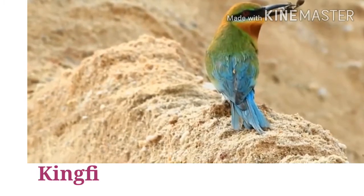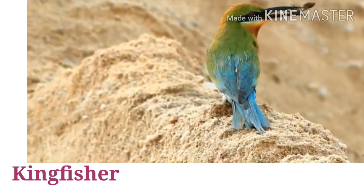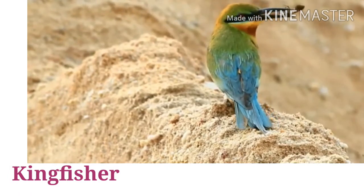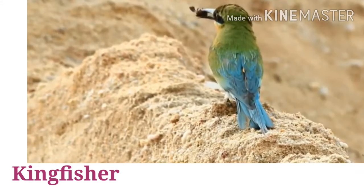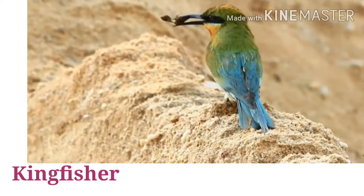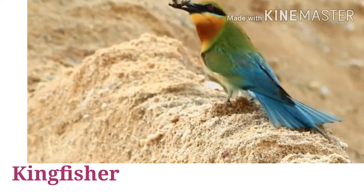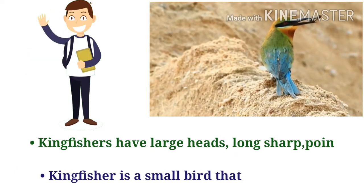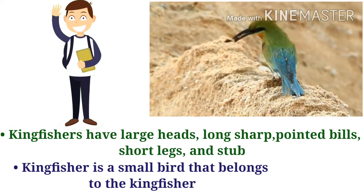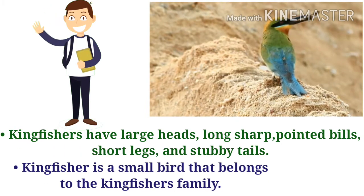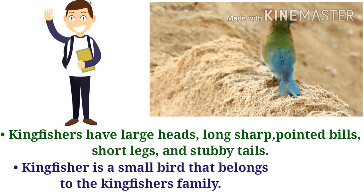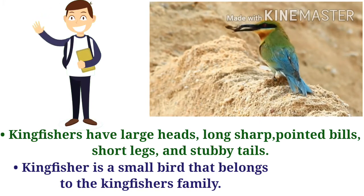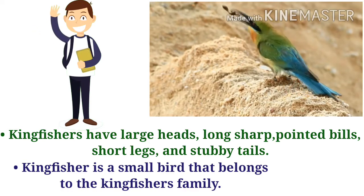Do you know this bird? This is a kingfisher. K-I-N-G-F-I-S-H-E-R. Let's introduce the kingfisher. Kingfishers have large heads, long sharp pointed bills, short legs, and stubby tails. The kingfisher is a small bird that belongs to the kingfisher family.